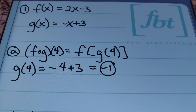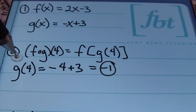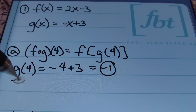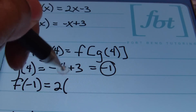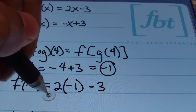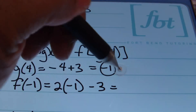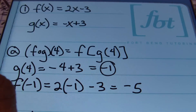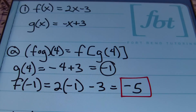I'm going to take this value of negative 1 and plug it into the F function. Now that G of 4 is equivalent to negative 1, we find F of negative 1 by replacing X in the F function with negative 1. This gives me 2 times negative 1, which is negative 2, and negative 2 minus 3 gives a value of negative 5. So F composite G of 4 is equivalent to negative 5.